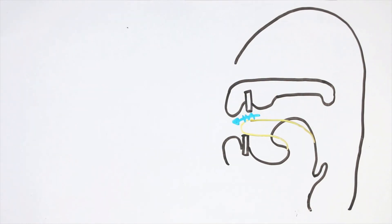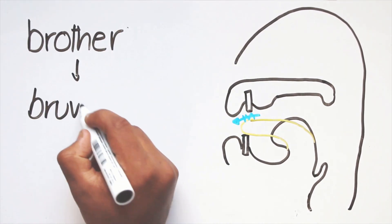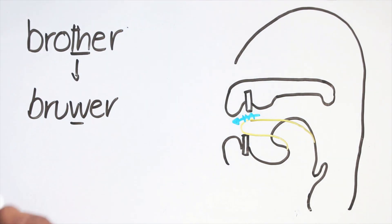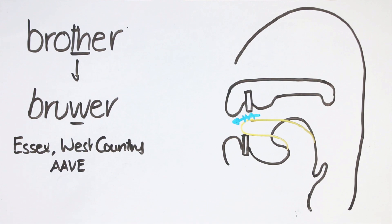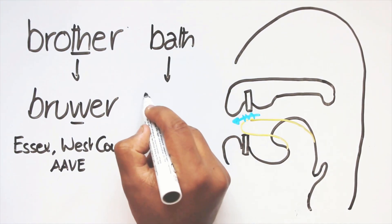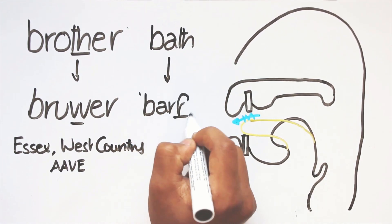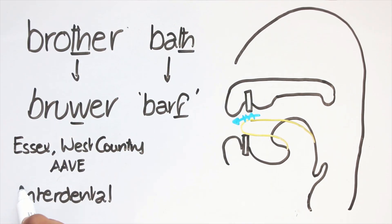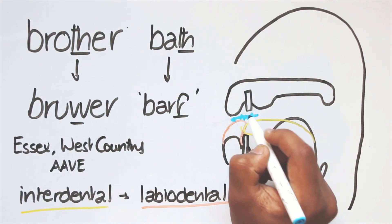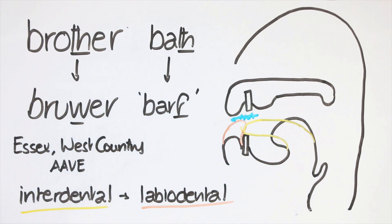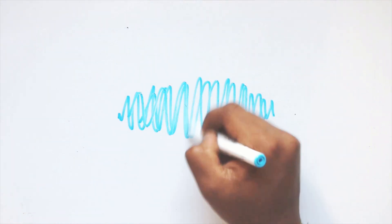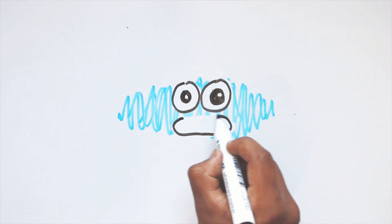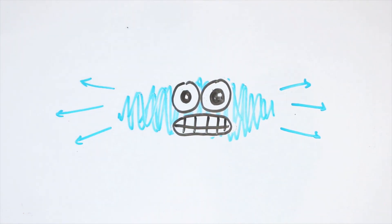This explains why brother is increasingly pronounced bruver in Essex and West Country dialects, as well as AAVE and others. This change occurs in the word bath, which is pronounced baf in these dialects. The point of articulation simply shifts forward from an interdental to a labiodental, in a change known as fronting. The rapid friction of the airflow in fricatives makes them unstable, making this kind of shift common.